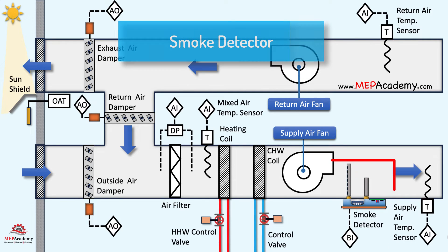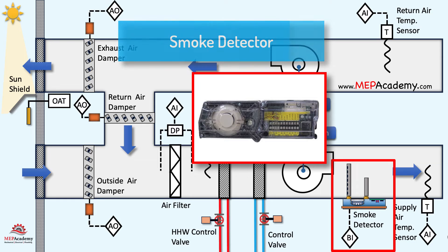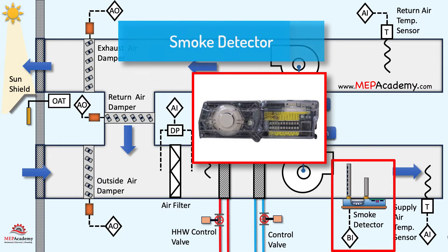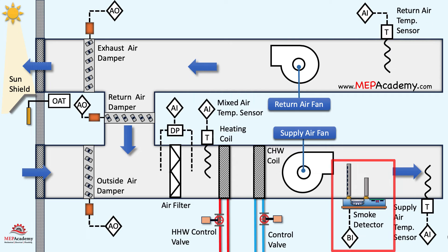The primary function of a smoke detector in an air handler is to detect the presence of smoke in the air circulating through the HVAC system. Once activated, it can initiate an automatic shutdown of the air handler to prevent the spread of smoke throughout the building. It can also trigger audible and visual alarms, alerting building occupants and personnel to the potential fire hazard.